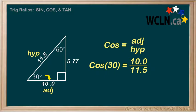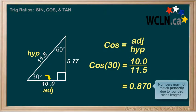And if we divide these, we get 10 divided by 11.5 is 0.87, again with a slight bit of rounding.